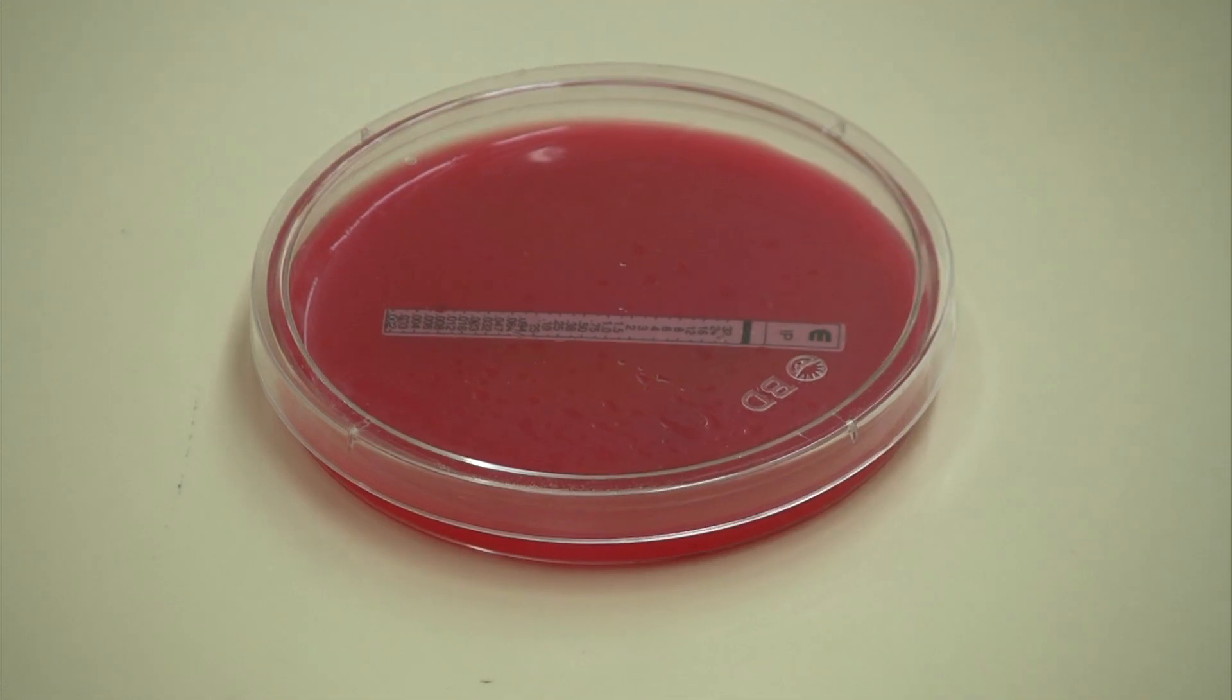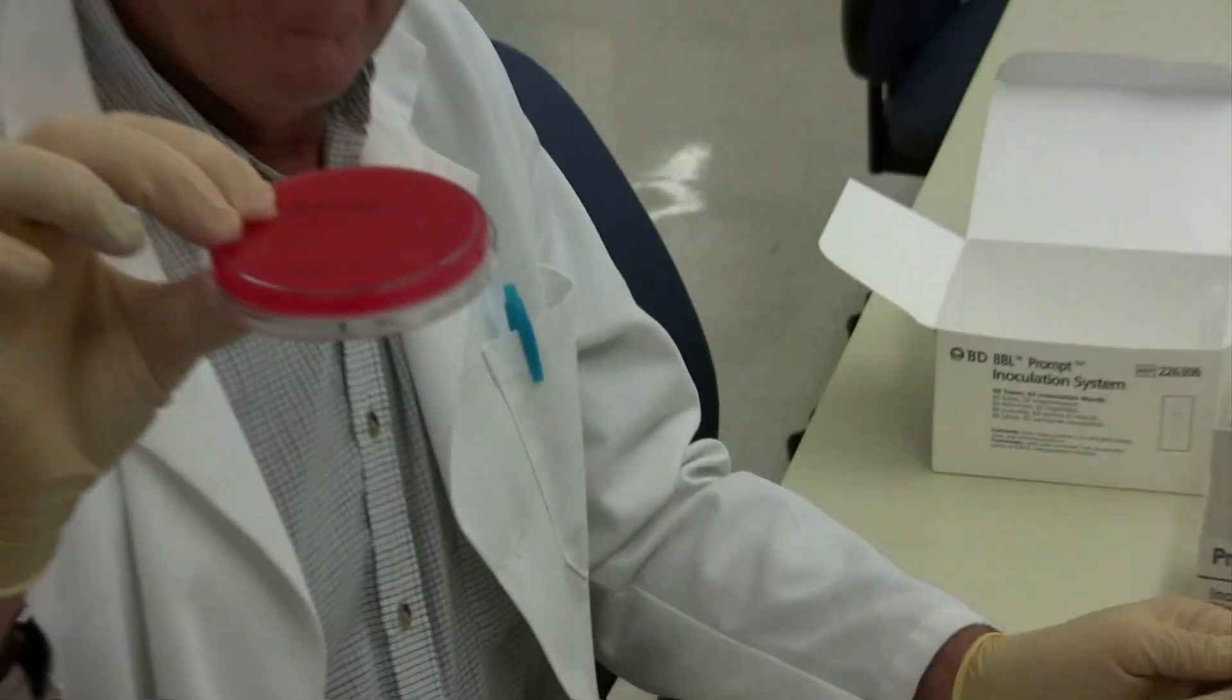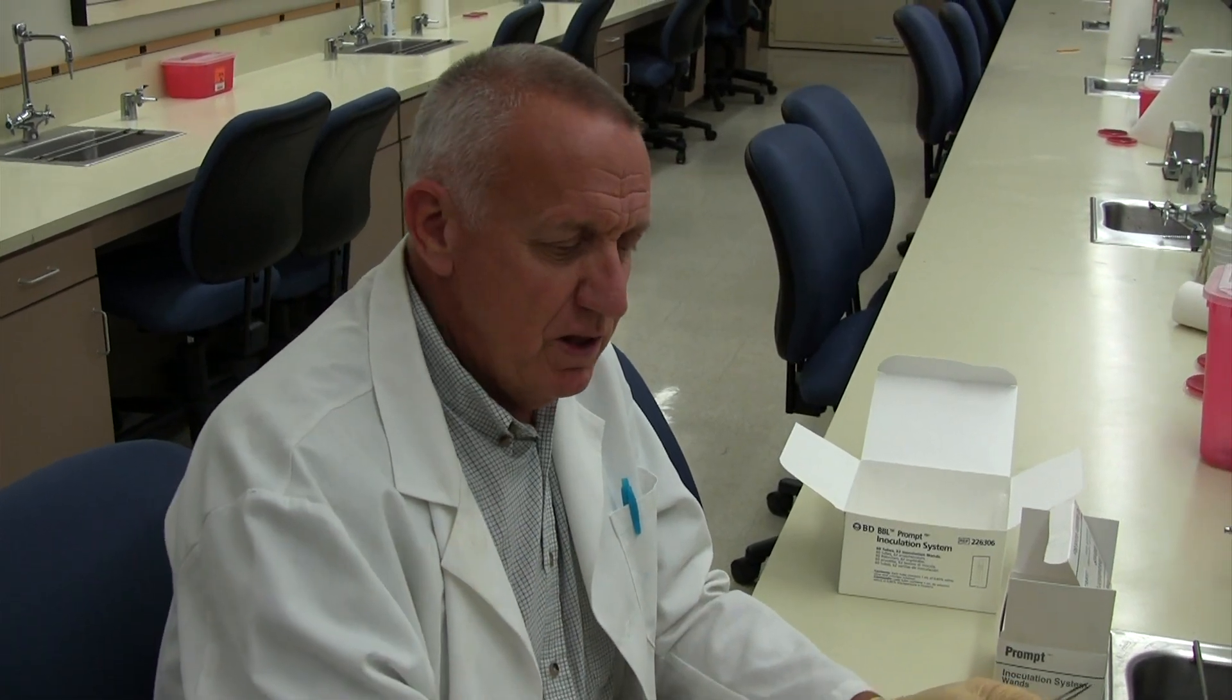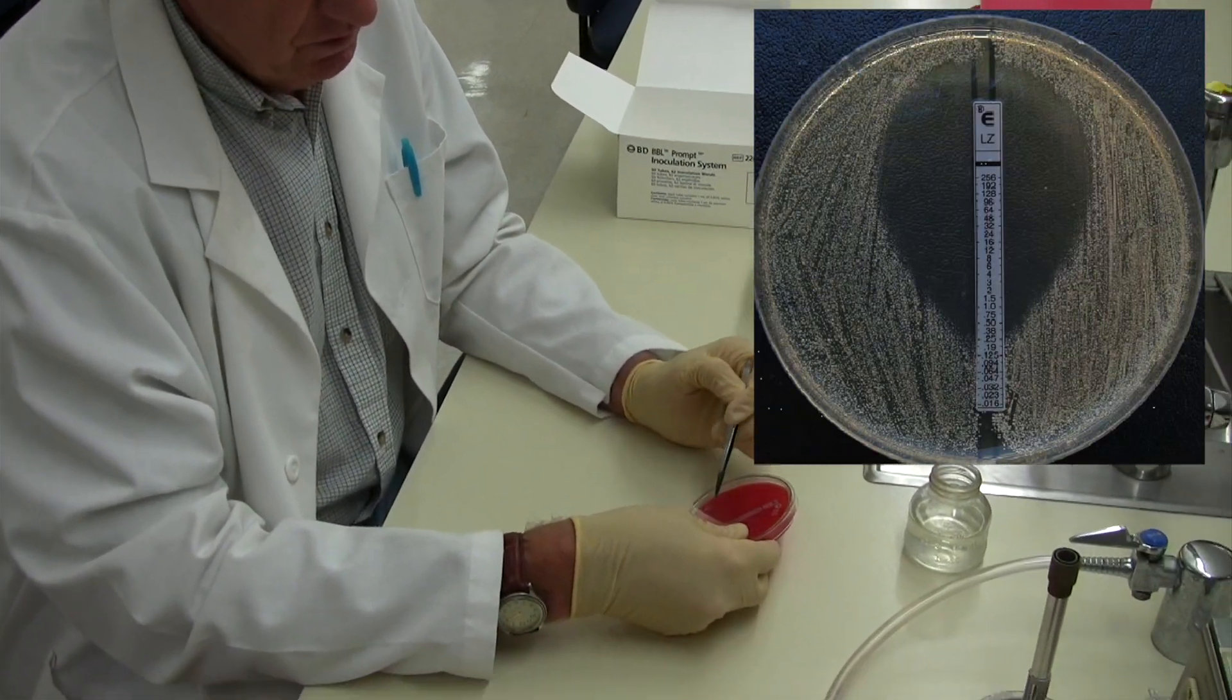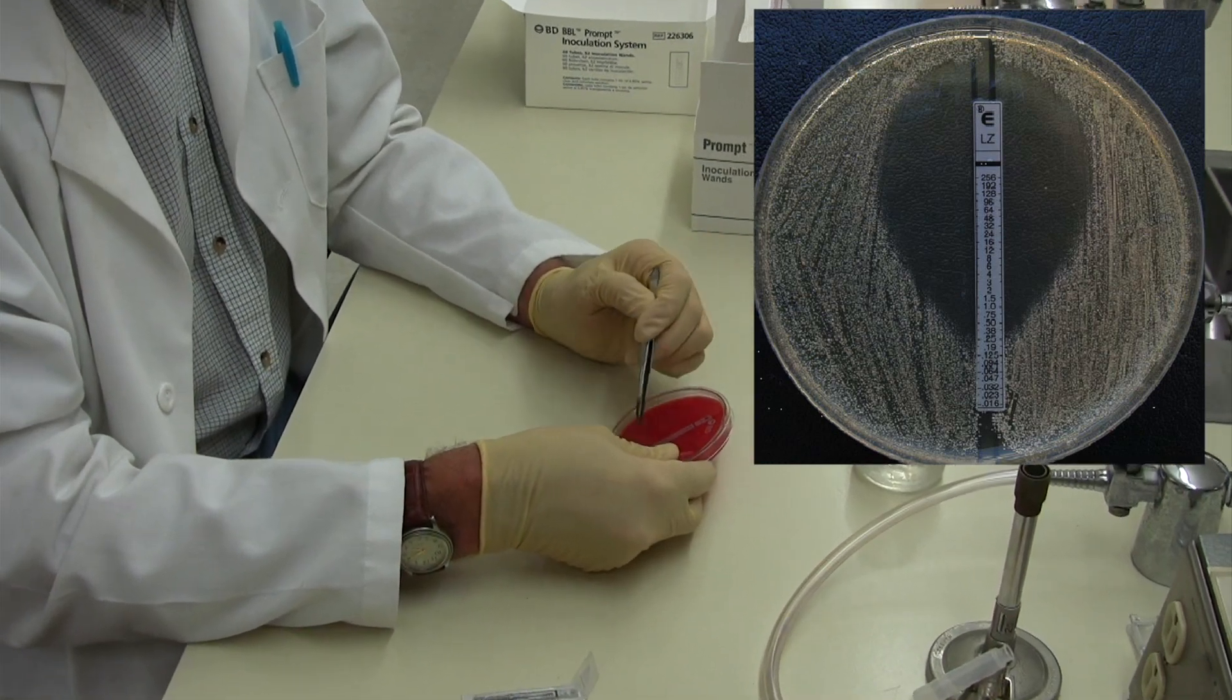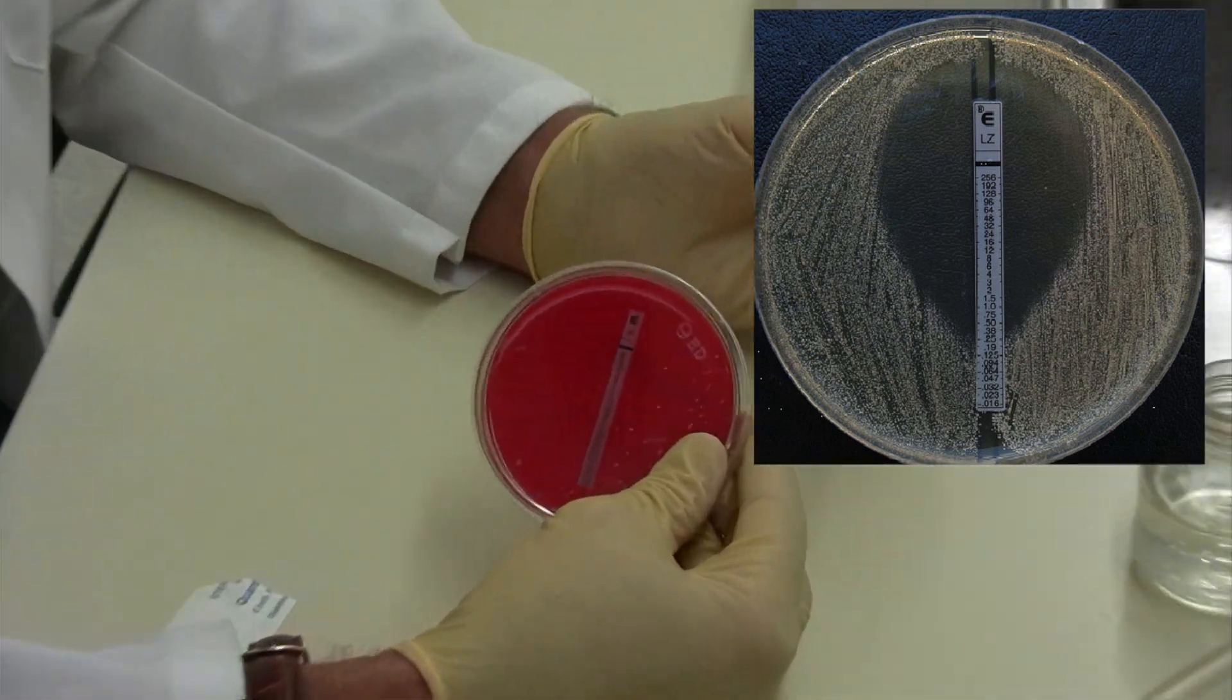Then label your plate, incubate it for 24 hours, and you can read the results where the line of growth or the zone of inhibition intersects the strip on the plate. Thank you.